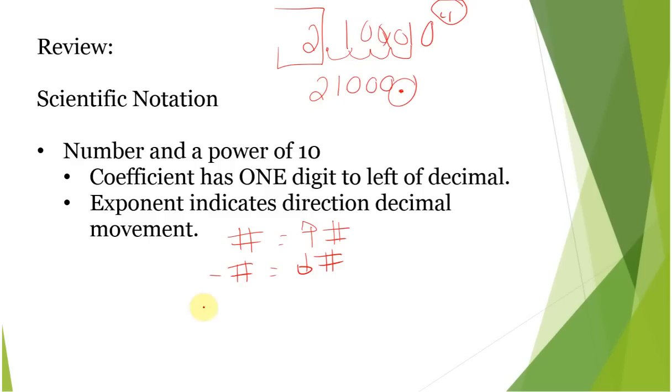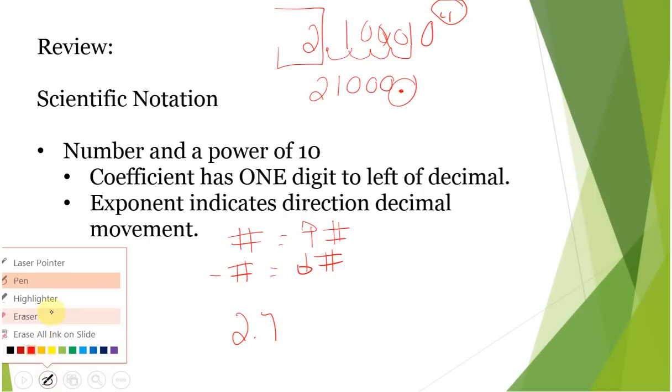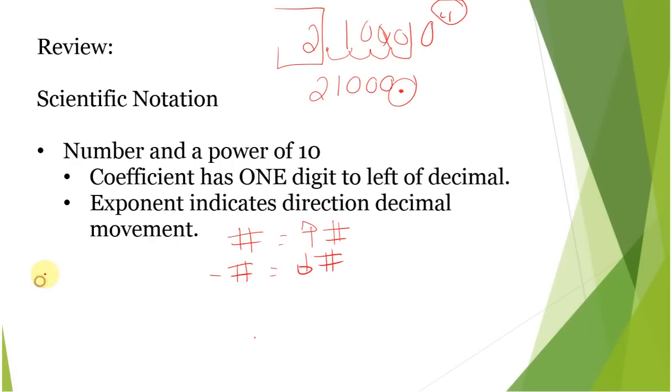If we had something like 4.9 times 10 to the 2, we're going to have a positive exponent here. So we move it over two spaces and fill in with 0. So this is going to be 490.